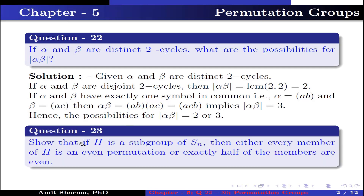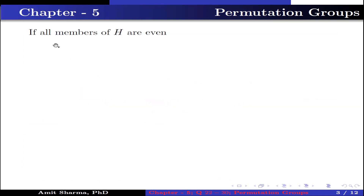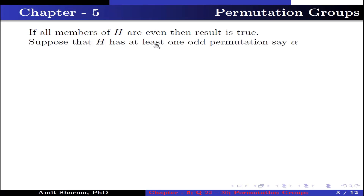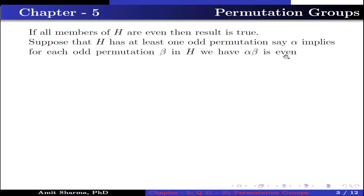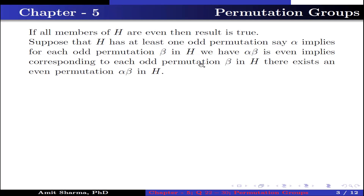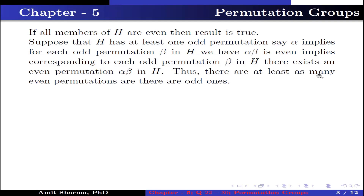Question number 23. Show that if H is a subgroup of SN, then either every member of H is an even permutation or exactly half of the members are even. Given H is a subgroup of SN. If all members of H are even, then the result is true. Suppose H has at least one odd permutation, say alpha. Then for each odd permutation beta in H, alpha beta is even, because the product of two odd permutations is even. This implies corresponding to each odd permutation beta in H, there exists an even permutation alpha beta in H. Thus, there are at least as many even permutations as there are odd ones.